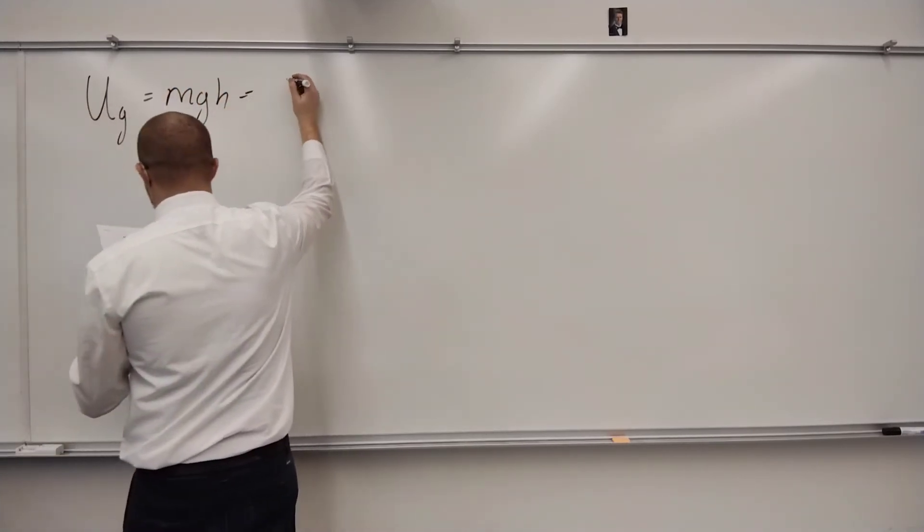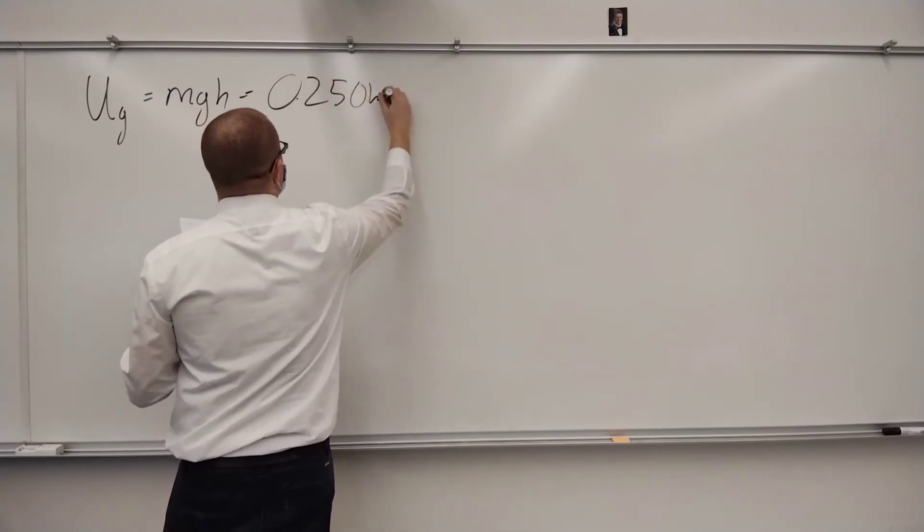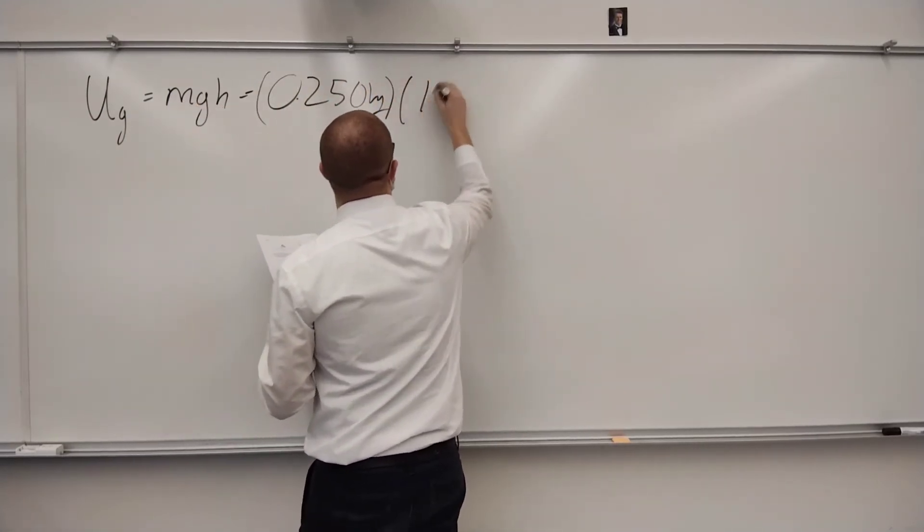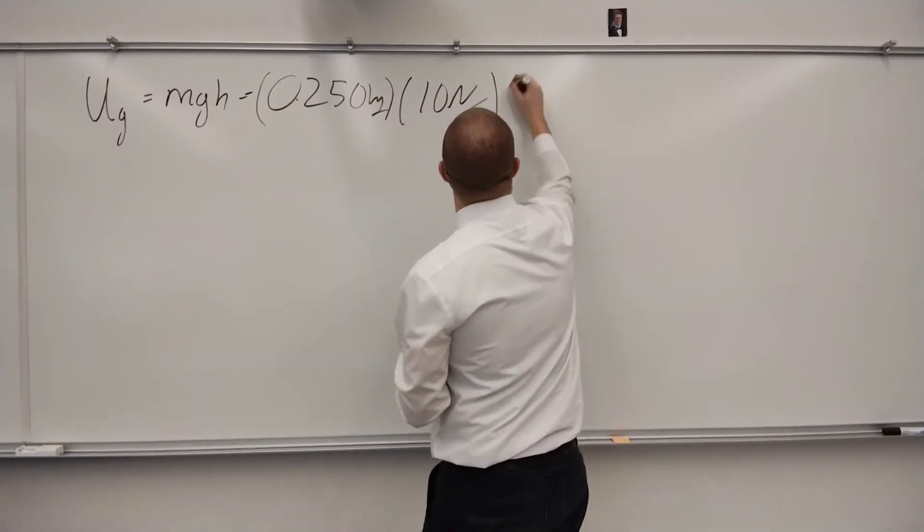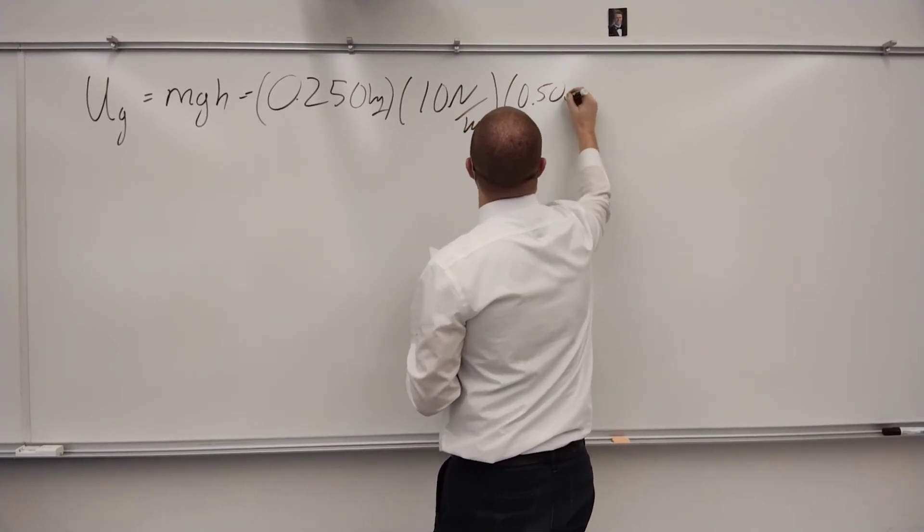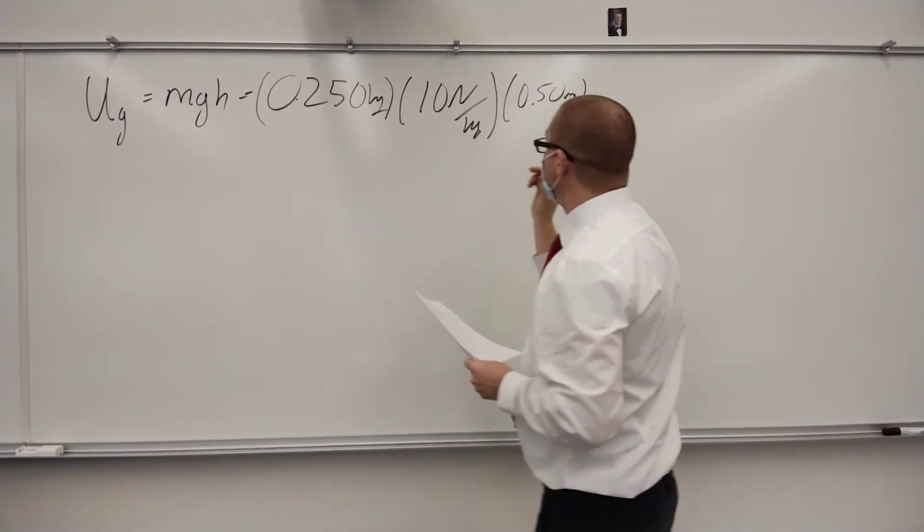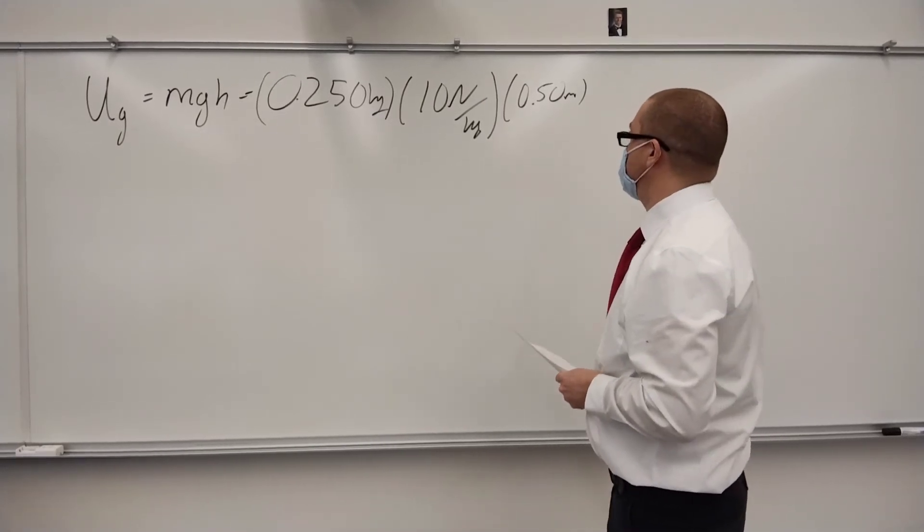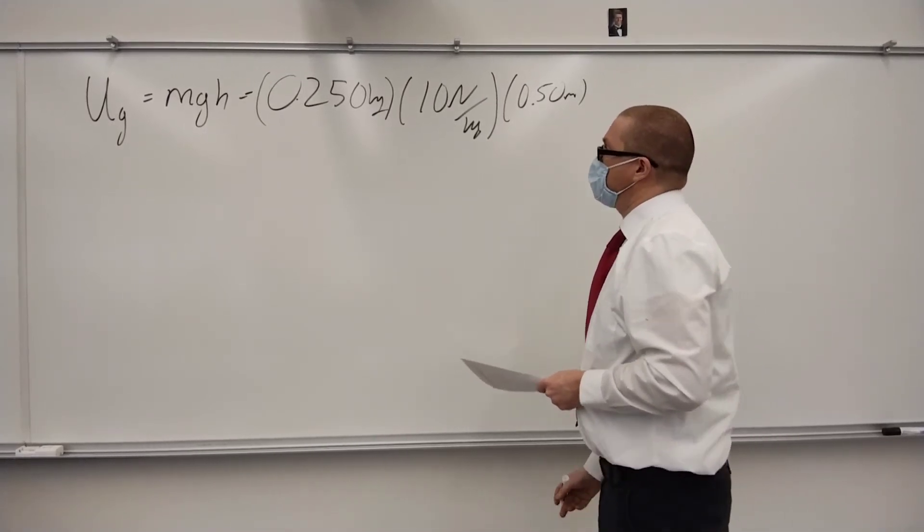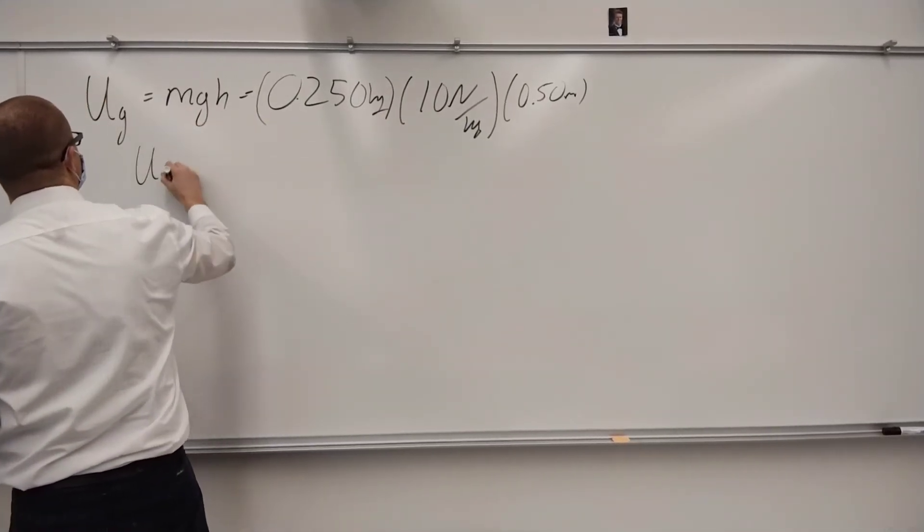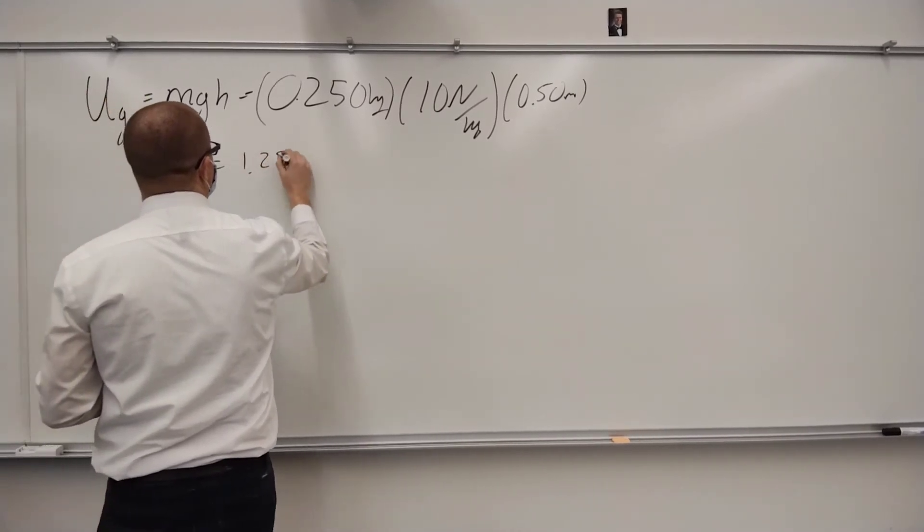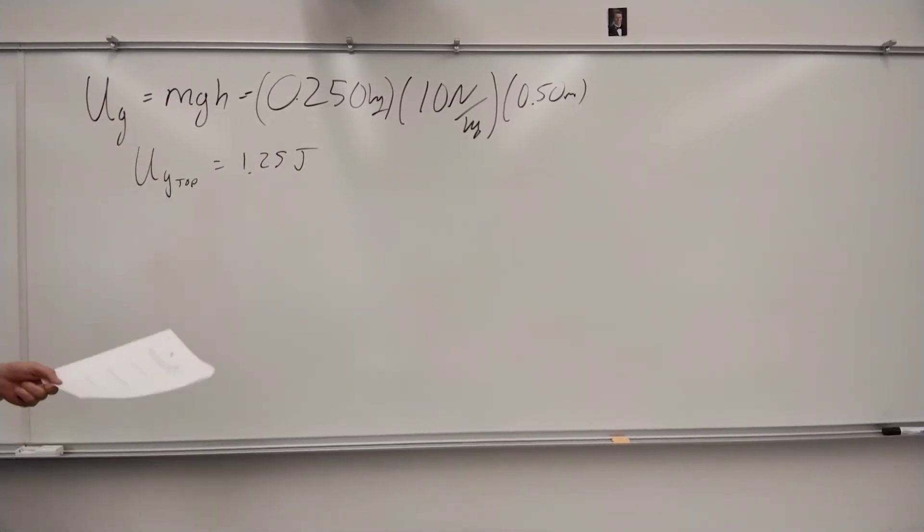So that's going to be 0.250 kilograms times, you can use 10, 10 newtons per kilogram times the height of 0.50 meters. So, we've got 0.25 times 10. So that looks like it's going to be about 1.25 joules. So UG at the top is 1.25 joules. Probably should only make it two sig figs, you know? 1.3 is probably what I should really do here.